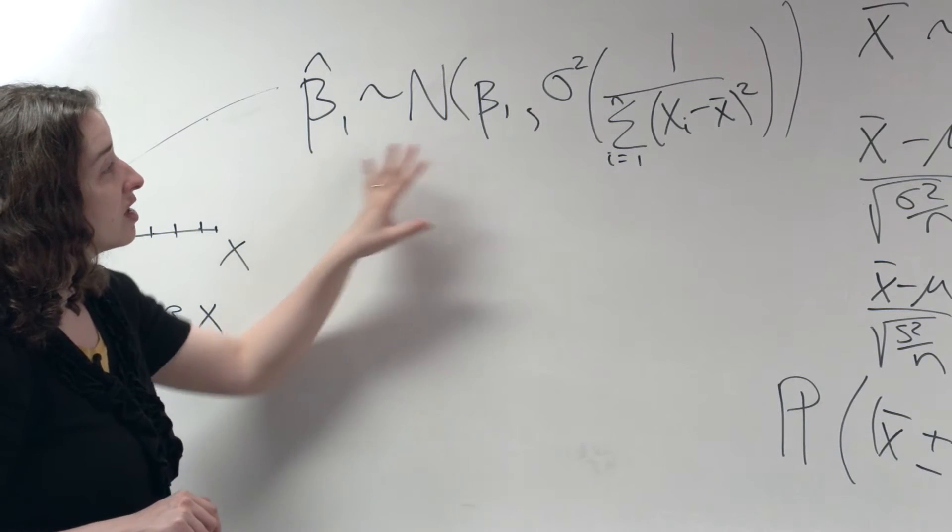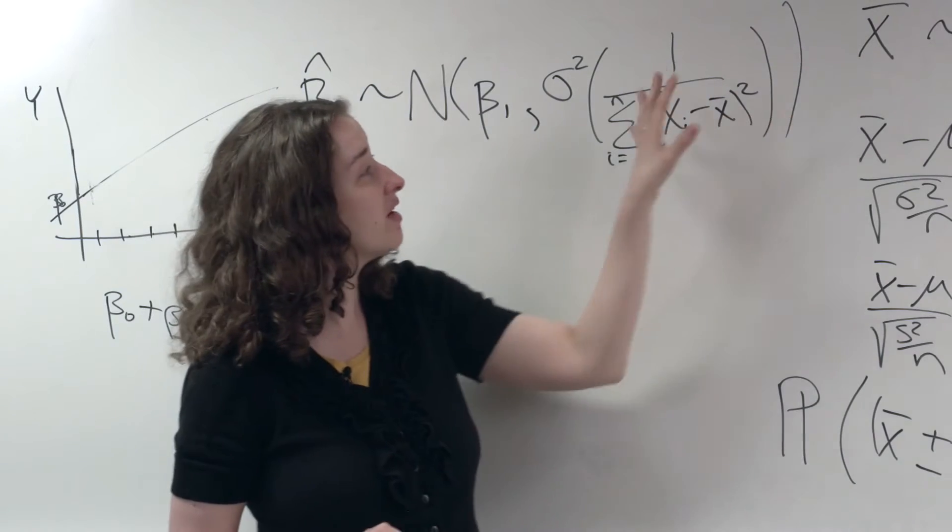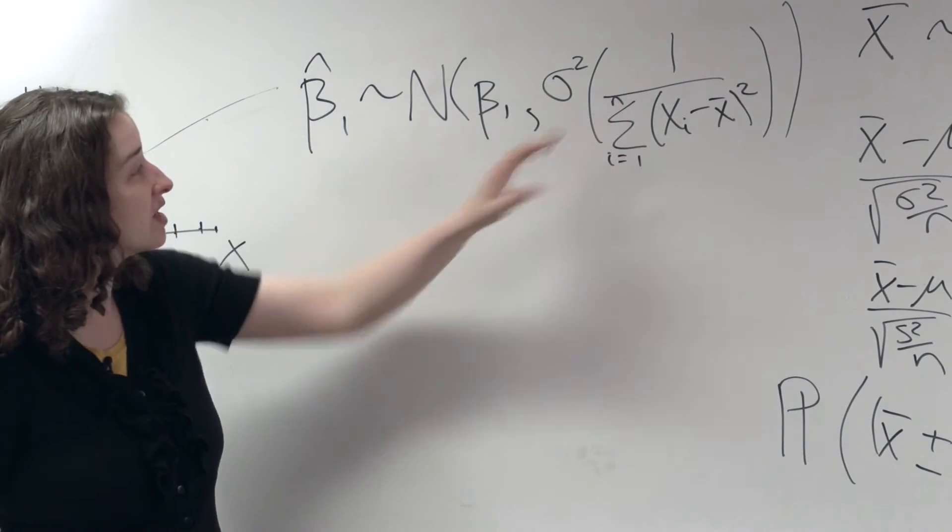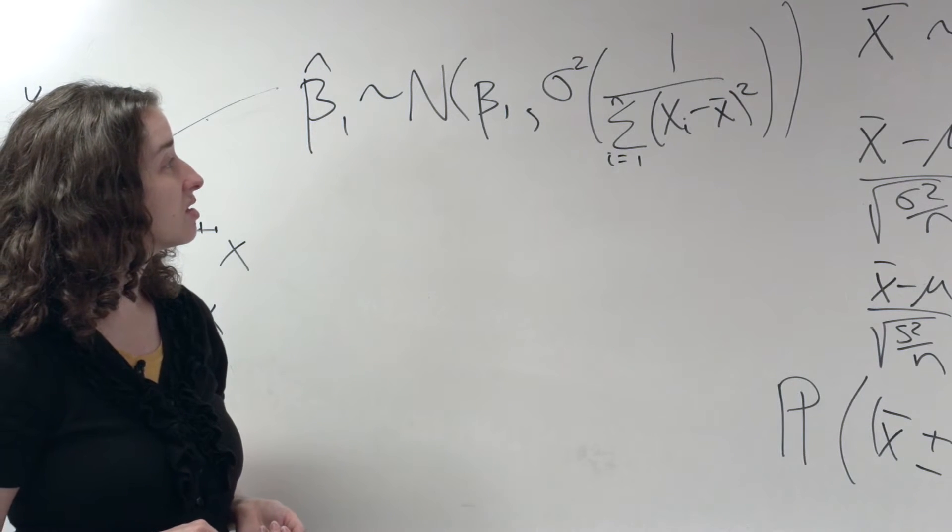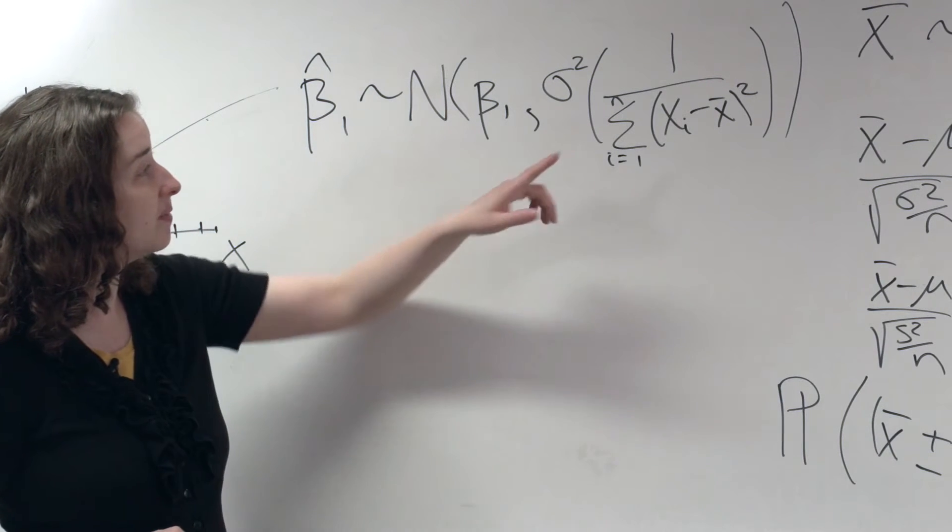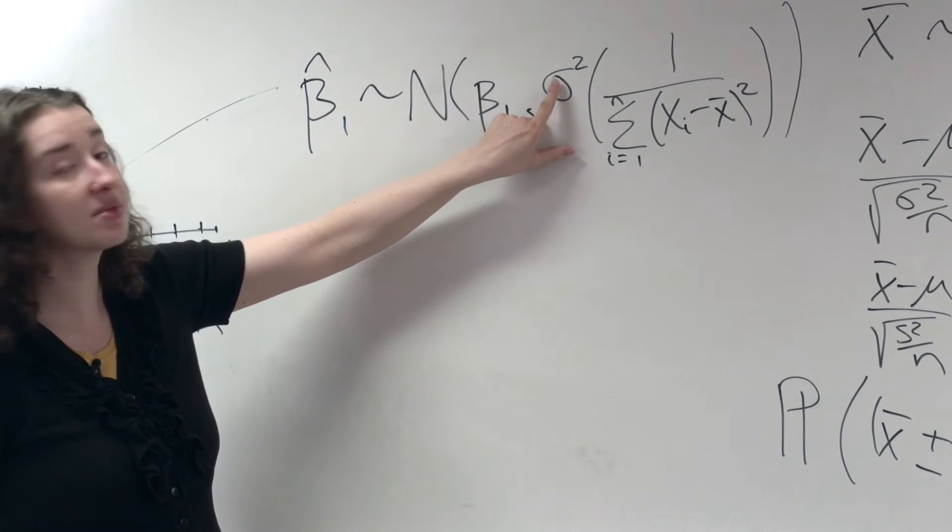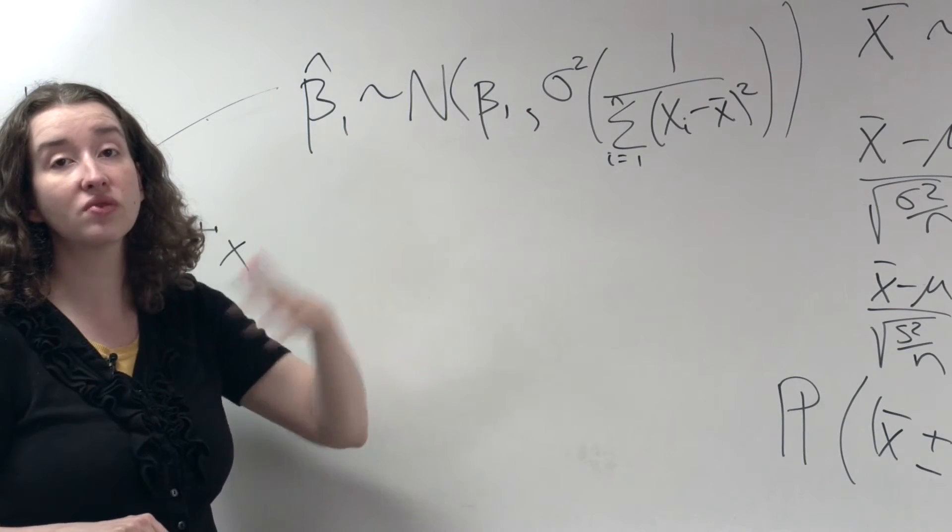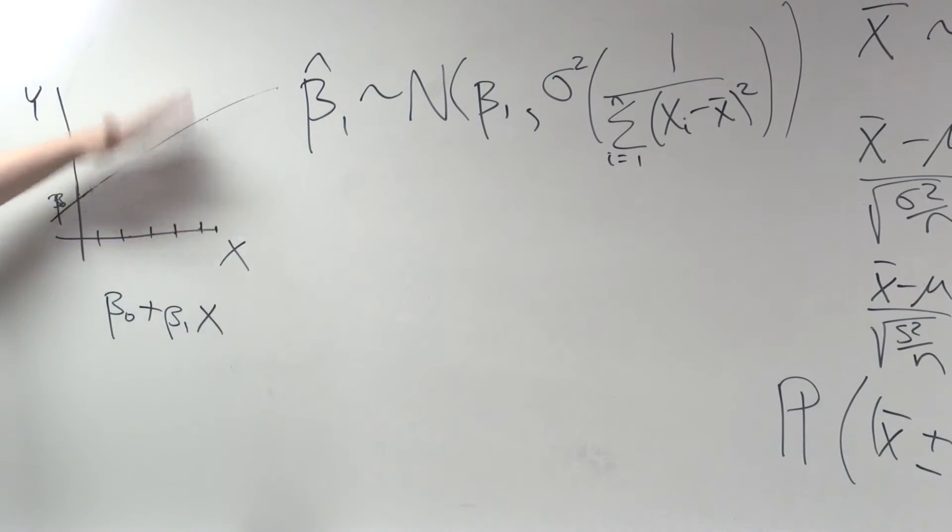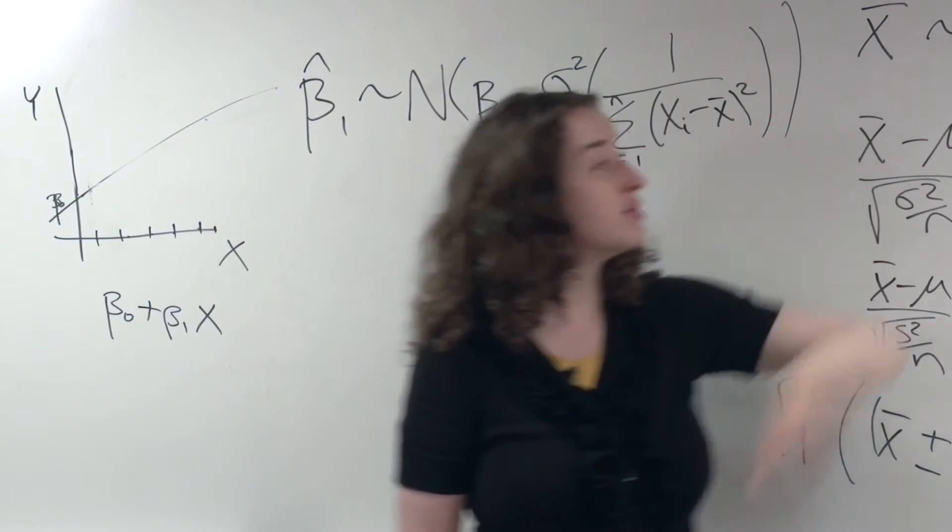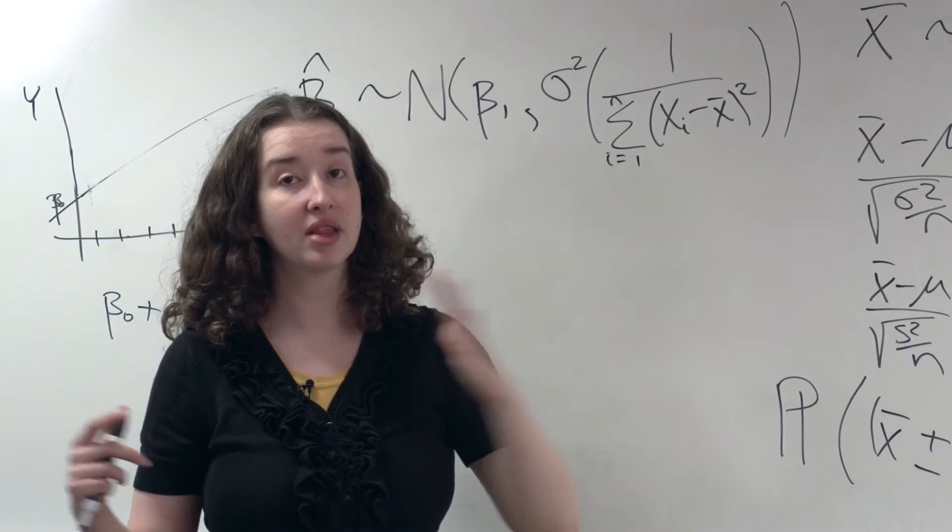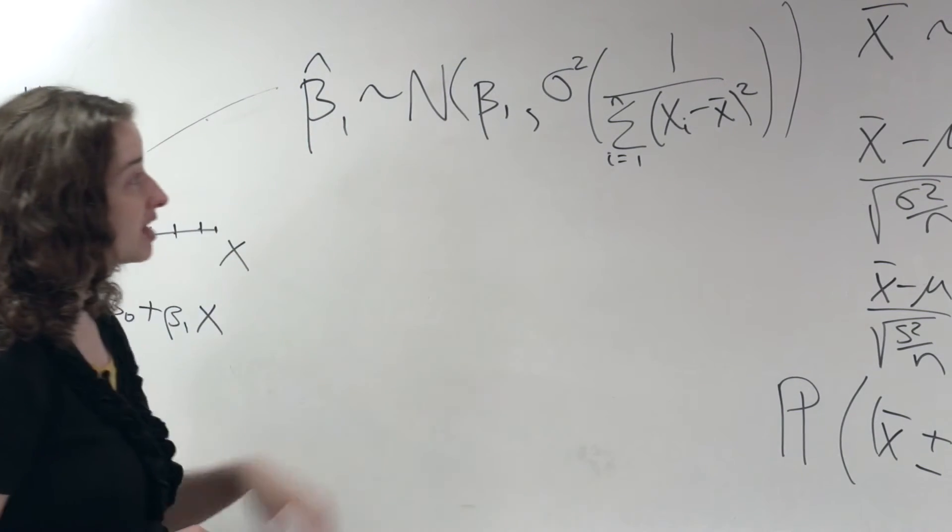And I want you to note the parallels in how these variances look. So what is this variance quantity? How much do we expect our slope estimate to deviate from the true slope? Well, it depends on sigma squared. It depends on the residual variance. It depends on how far the values are on average from the line. Just like the variance of x-bar depends on how much the values in the population deviate from the mean in the population.